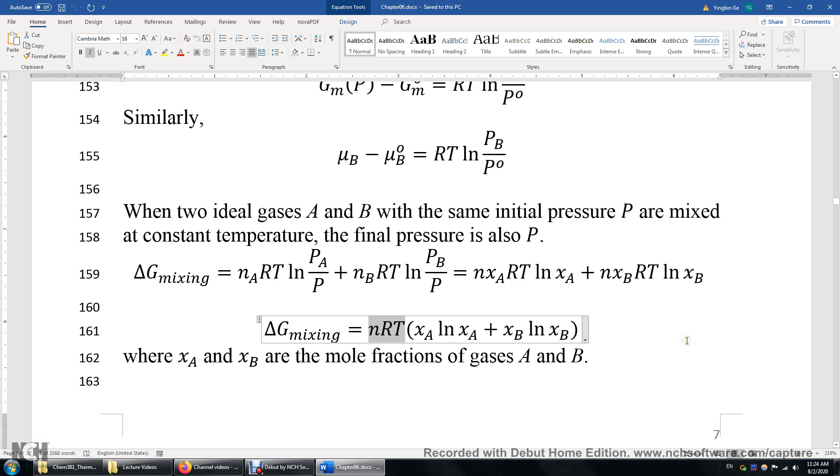And then if you have one bar, let's say, one bar nitrogen mixing with one bar oxygen, same amount, well, that's not air. But what you can do is you can just use this equation. It's N, R, T times 0.5 ln 0.5 plus 0.5 ln 0.5.